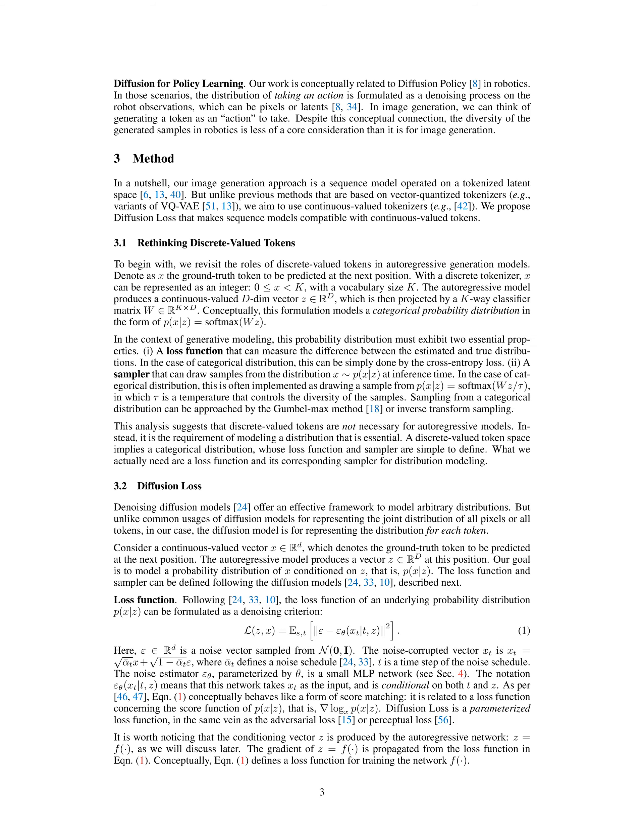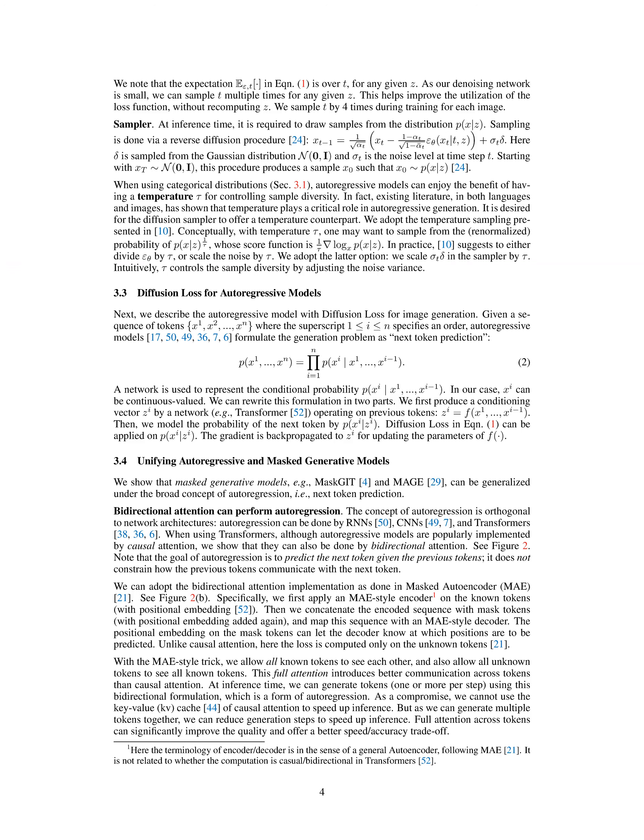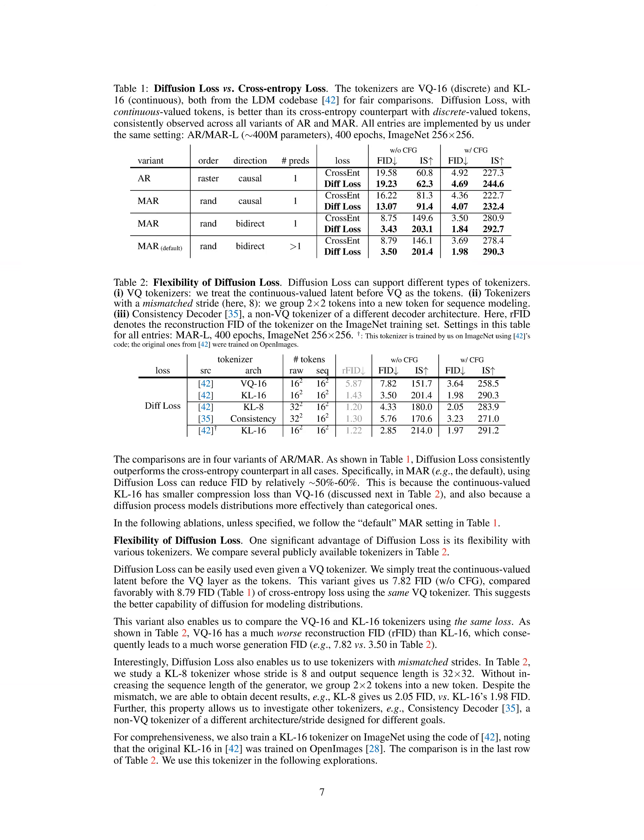During inference time in the proposed method, the diffusion sampler is used to draw samples from the distribution p(x | z). The diffusion sampler follows a reverse diffusion procedure, where samples are generated iteratively starting from a random noise vector x_t and moving towards the desired distribution p(x | z). The diffusion process involves multiple steps, but at inference, only a subset of these steps are used to generate samples efficiently. Specifically, using 100 diffusion steps at inference is sufficient to achieve strong generation quality.